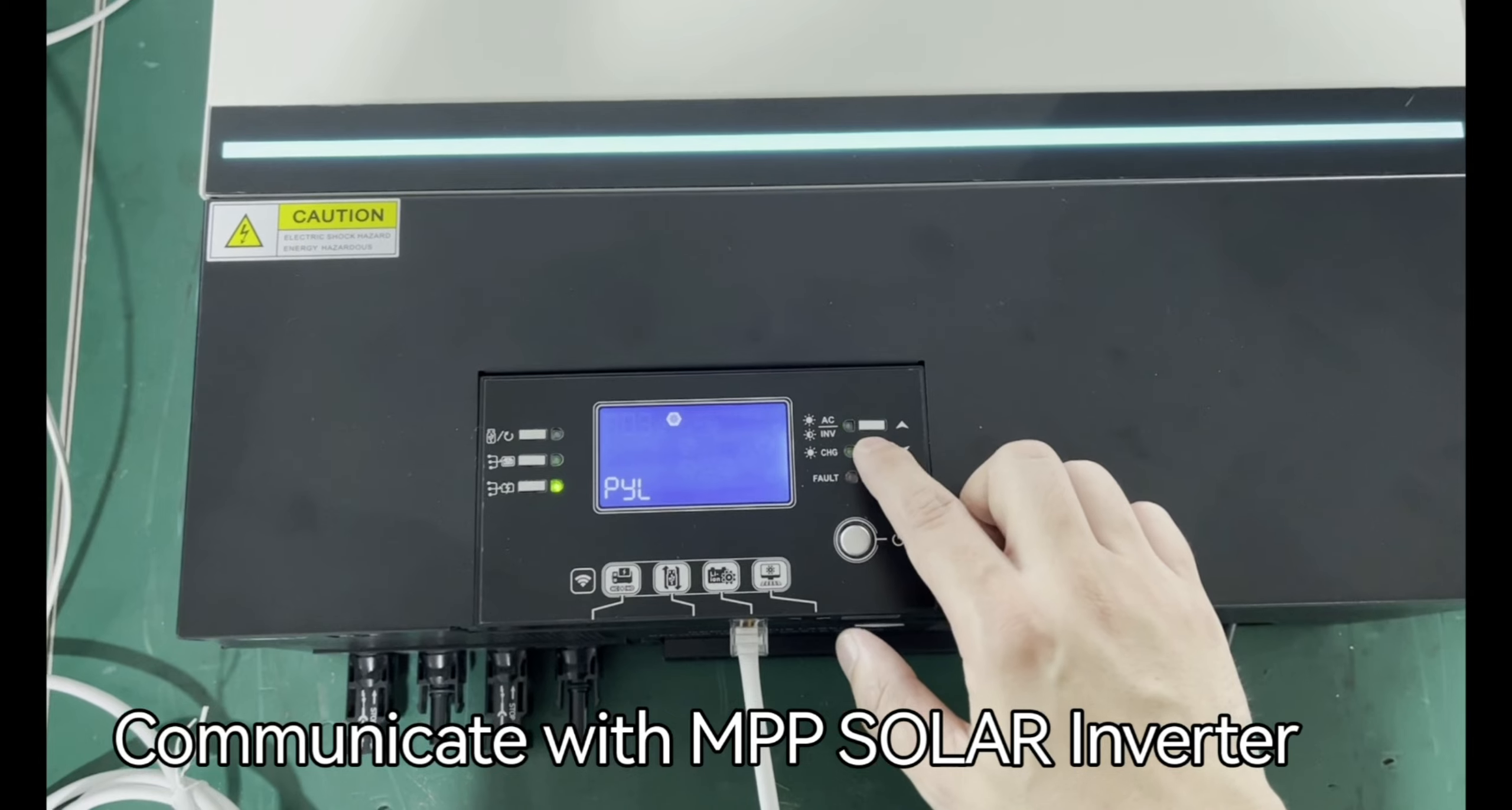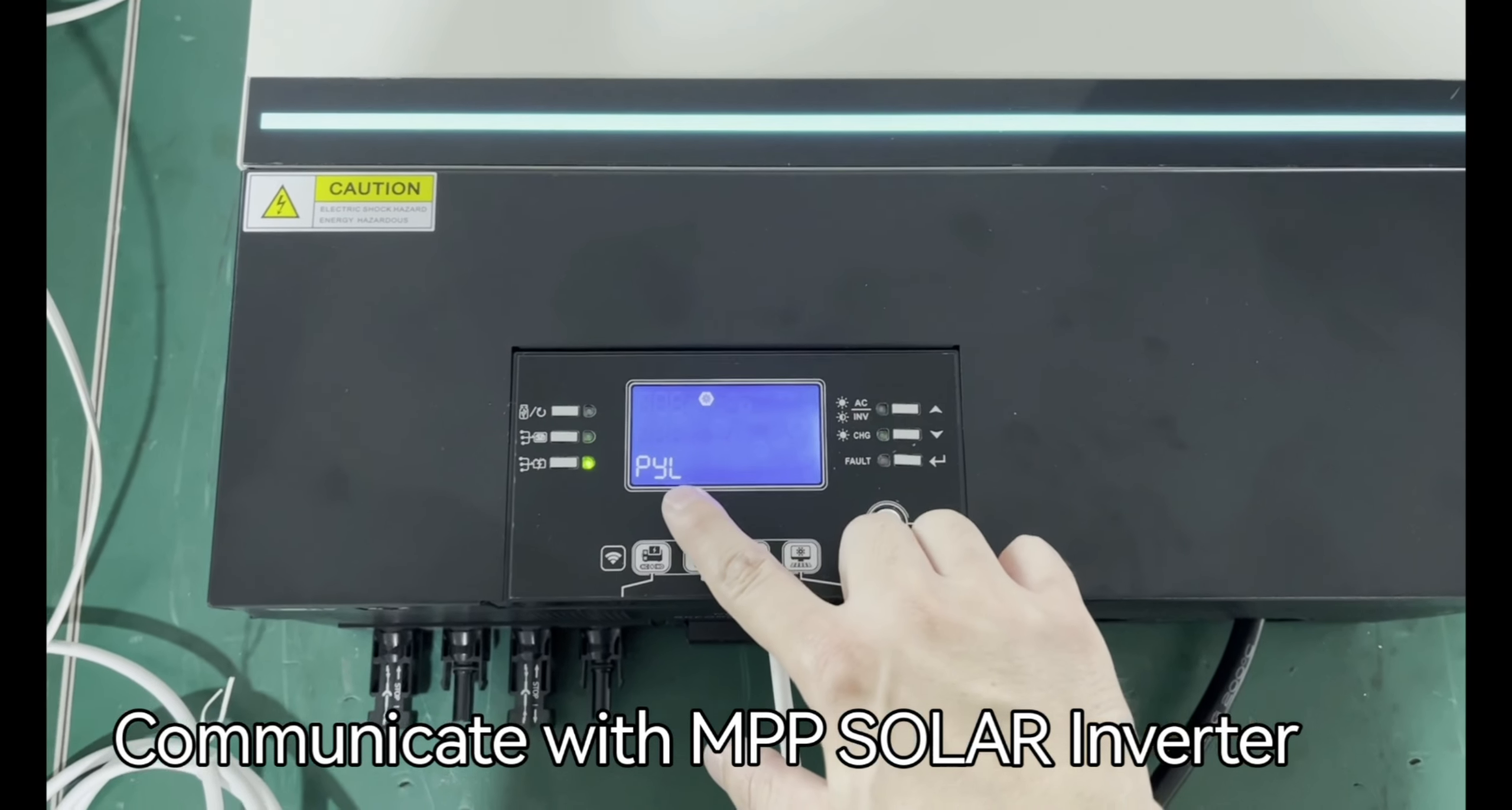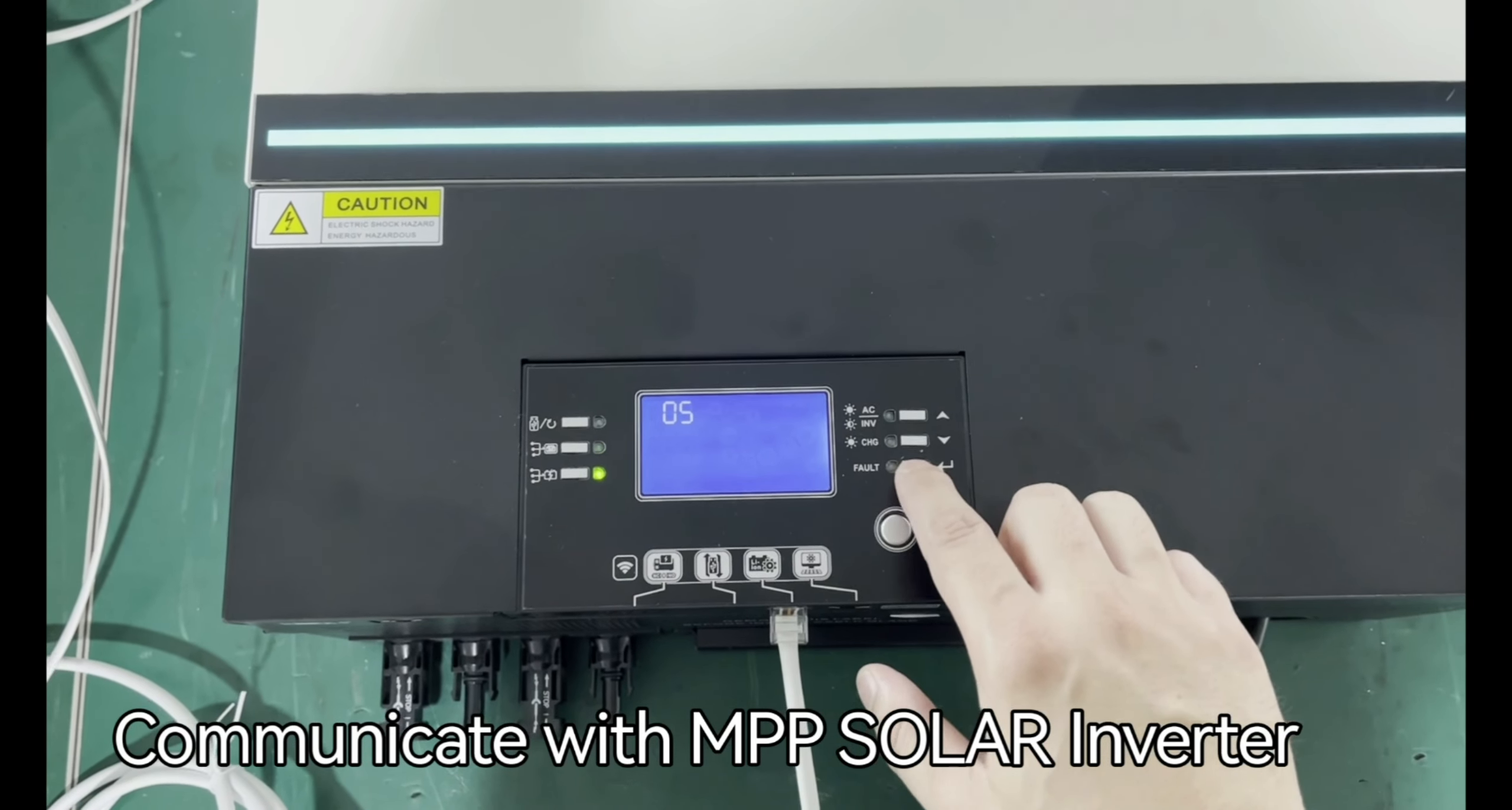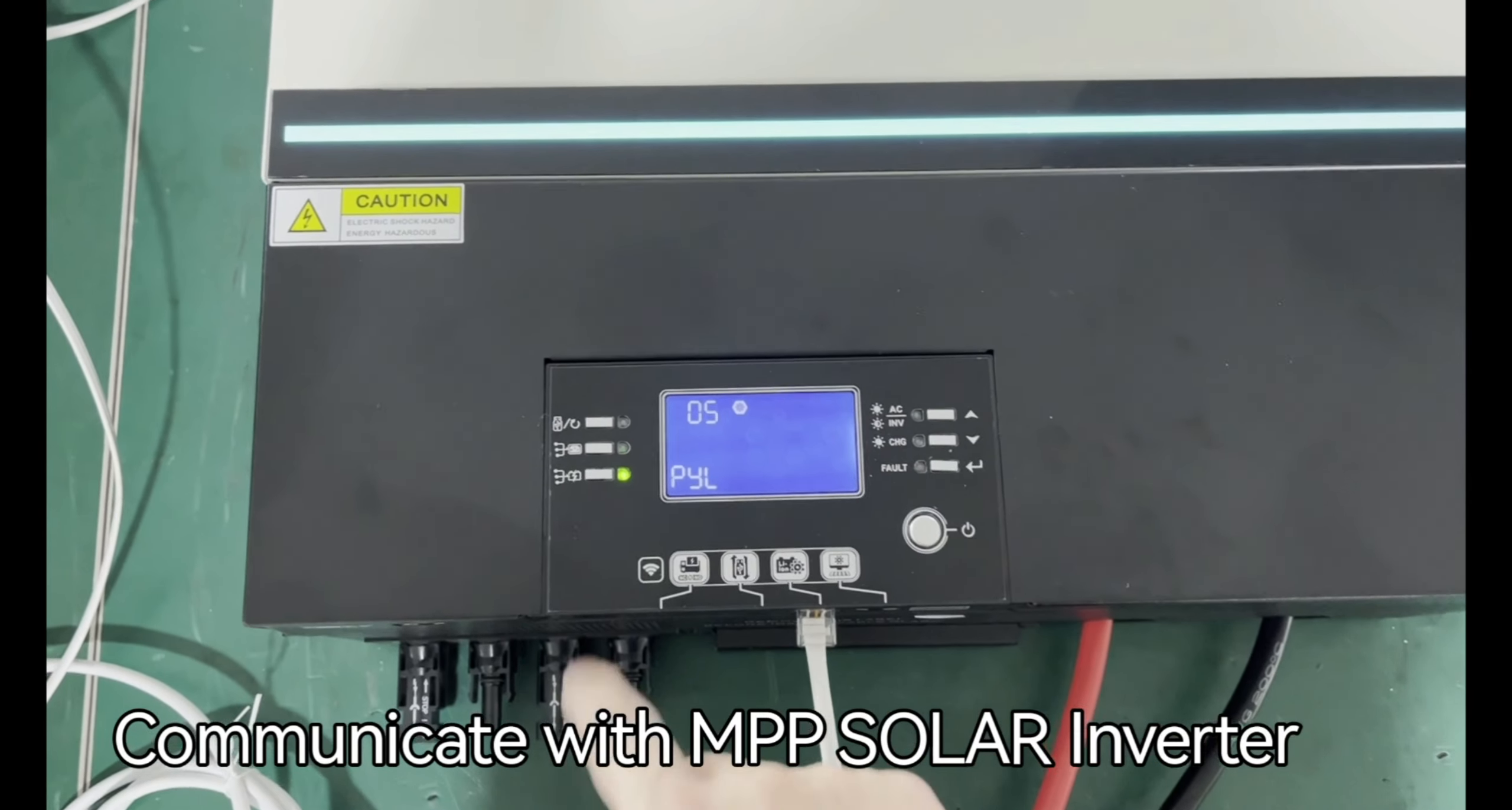We will set the parameter. From group 5, we set as PYL pylon, press enter to confirm and exit.